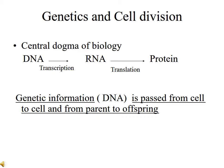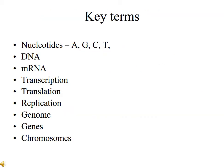Genetic information is passed from cell to cell and from parent to offspring through this process. Let's review some key terms before we go forward. Remember, nucleotides consist of phosphate groups, sugar, and bases.